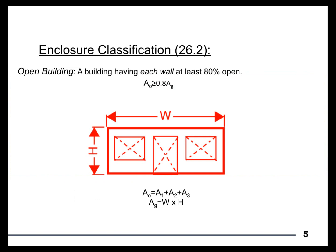The first definition, per ASCE 7, is an open building. In order to be an open building, each of our walls needs to be at least 80% open. It doesn't say two of the walls or three of the walls — each wall needs to be at least 80% open. We add up the openings, divide by the gross area of that wall, and it needs to be at least 80% open. That's relatively straightforward.